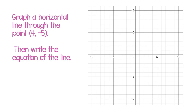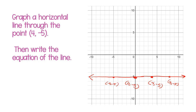Now let's graph a horizontal line through the point 4, negative 5. I'm going to go to 4 and then down to negative 5, and just draw my horizontal line straight across through that point. All of my points on this line have a y-coordinate of negative 5. So the equation of the line is y equals negative 5.